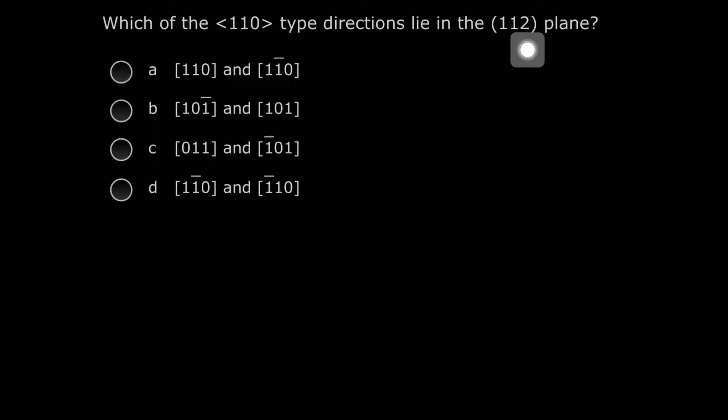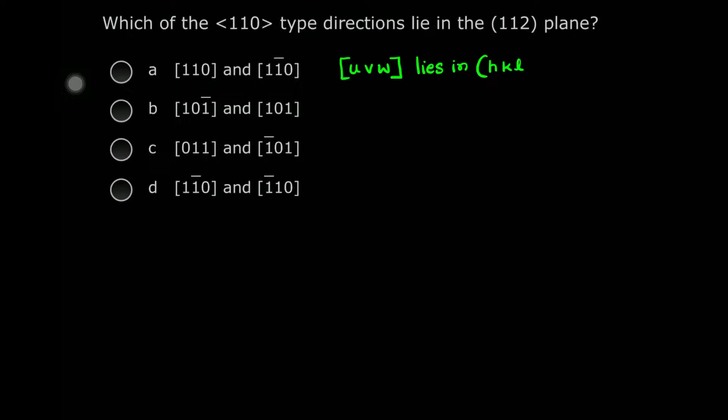So basically, if a direction [uvw] lies in a plane (hkl), then it must satisfy the relation hu + kv + lw = 0. That is, the dot product of these two vectors must be equal to 0.